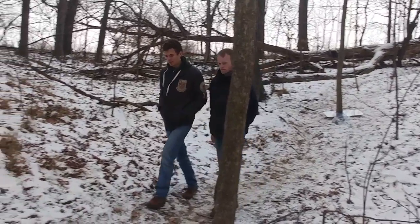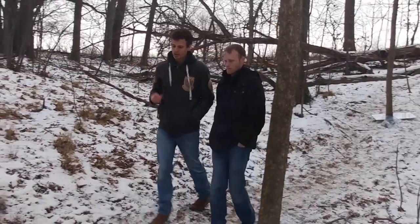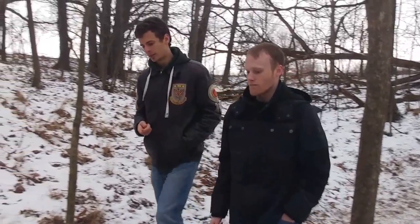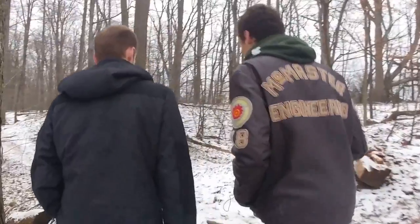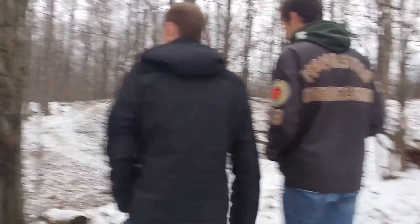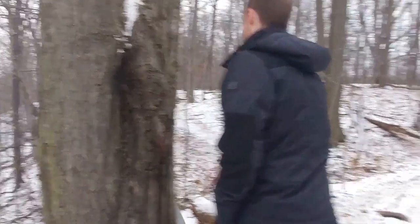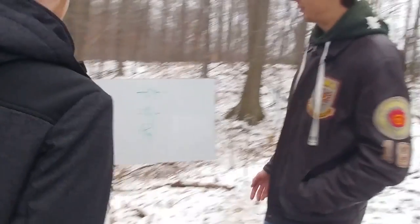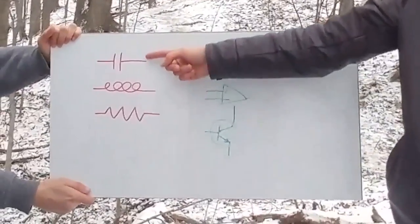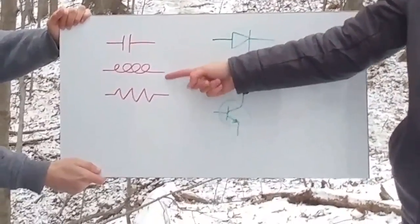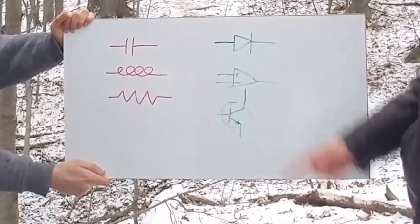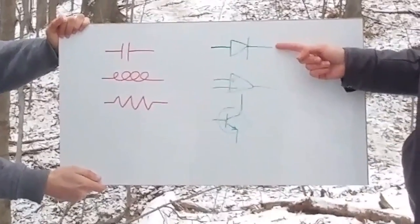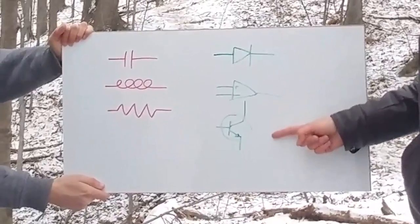Yeah, it seems pretty simple. We need two stages: one for the filtering and one for the amplification. We can use a combination of capacitors, inductors, and resistors for the passive filtering stage, and in terms of amplification we can use diodes, op amps, and transistors.